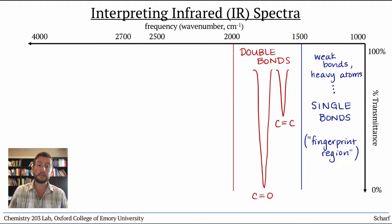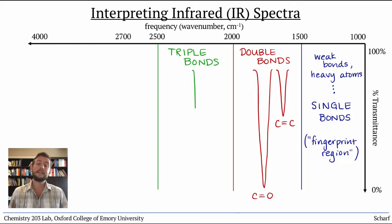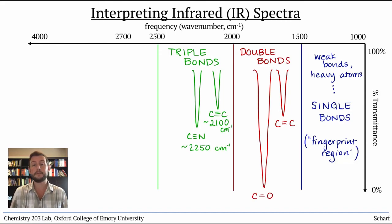Next, we come to the triple bond region, between 2000 and 2500 wavenumbers. There are really only two types of triple bonds that are commonly seen, and they're reasonably distinguishable. C≡N triple bonds, usually in nitriles, absorb at about 2250 wavenumbers, and the C≡C triple bonds of alkynes typically absorb at about 2100 wavenumbers.